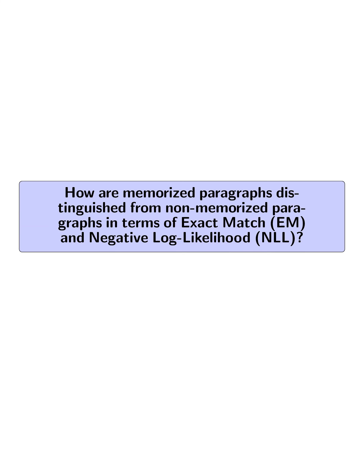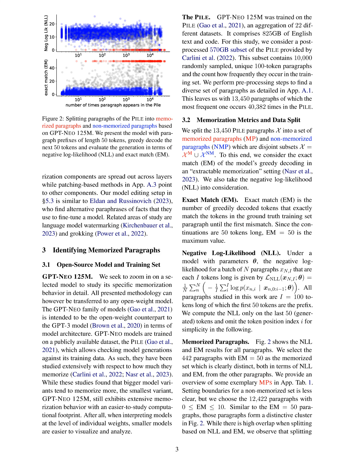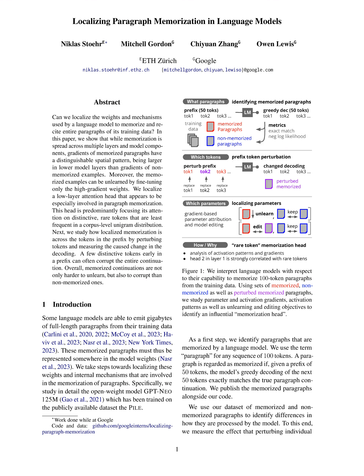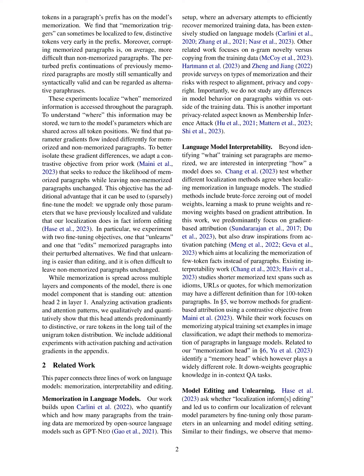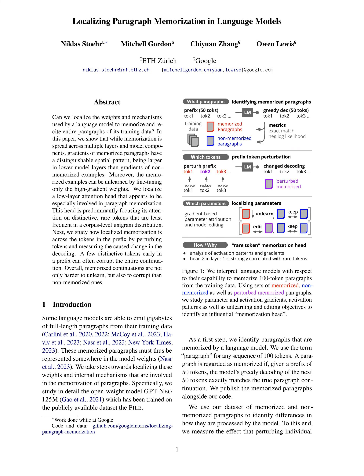How are memorized paragraphs distinguished from non-memorized paragraphs in terms of exact match M and negative log likelihood NLL? Memorized paragraphs are distinguished based on exact match M and NLL. Specifically, memorized paragraphs exhibit a perfect M score of 50, meaning that the model's greedy decoding exactly matches the true paragraph continuation for all 50 tokens. Non-memorized paragraphs have an EM score ranging from 0 to 10, indicating mismatches within the first 50 tokens. In terms of NLL, memorized paragraphs show lower NLL values, implying the model is more confident and accurate in generating the next 50 tokens.